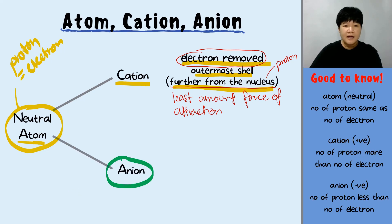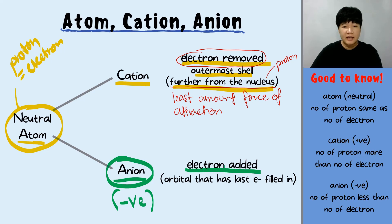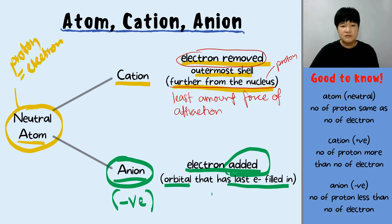When it's an anion, an anion is formed when an electron is added into the neutral atom. An anion is a negative charge ion, so to form a negative charge ion, an electron must always be added. The electron will be added into the orbital that has the last electron filled in, continuing from where you stopped at the neutral atom.